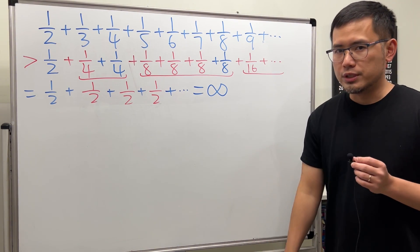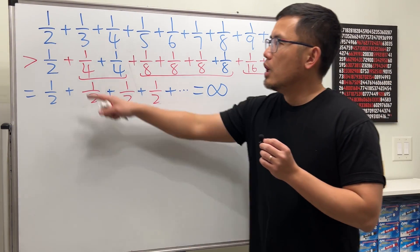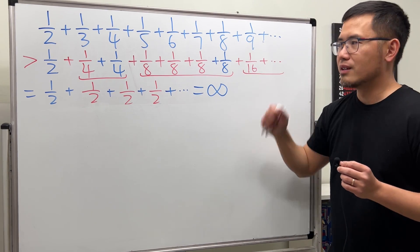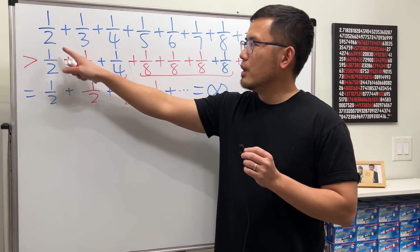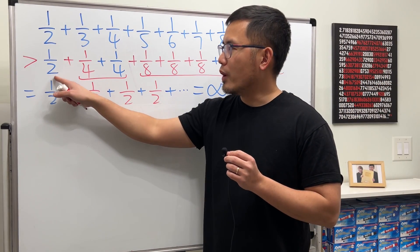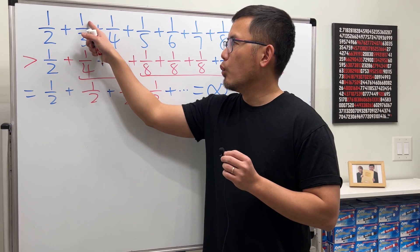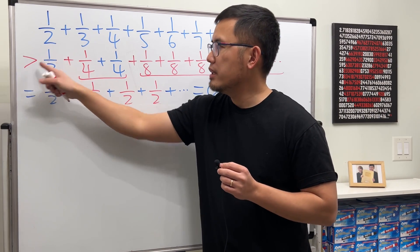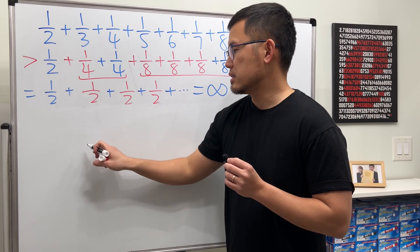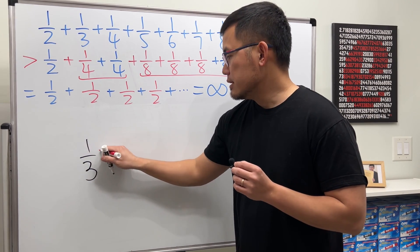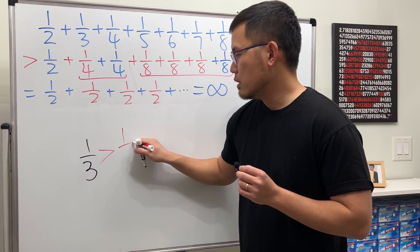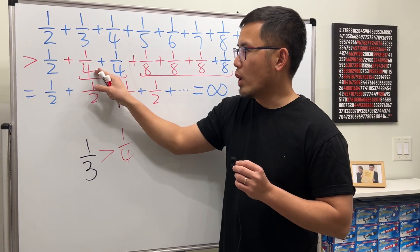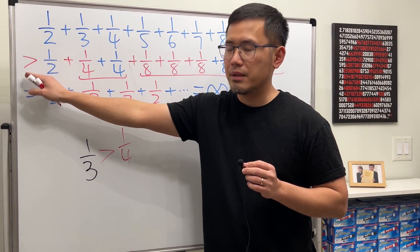Let's review the harmonic series again: 1 over 2 plus 1 over 3 plus 1 over 4, and so on forever. Have a look. 1 half is 1 half, and then you see that 1 third — we can replace that by something greater than 1 over 4, because 1 third is certainly greater than 1 over 4. So I'm just replacing this with 1 over 4, and then we have the greater than.